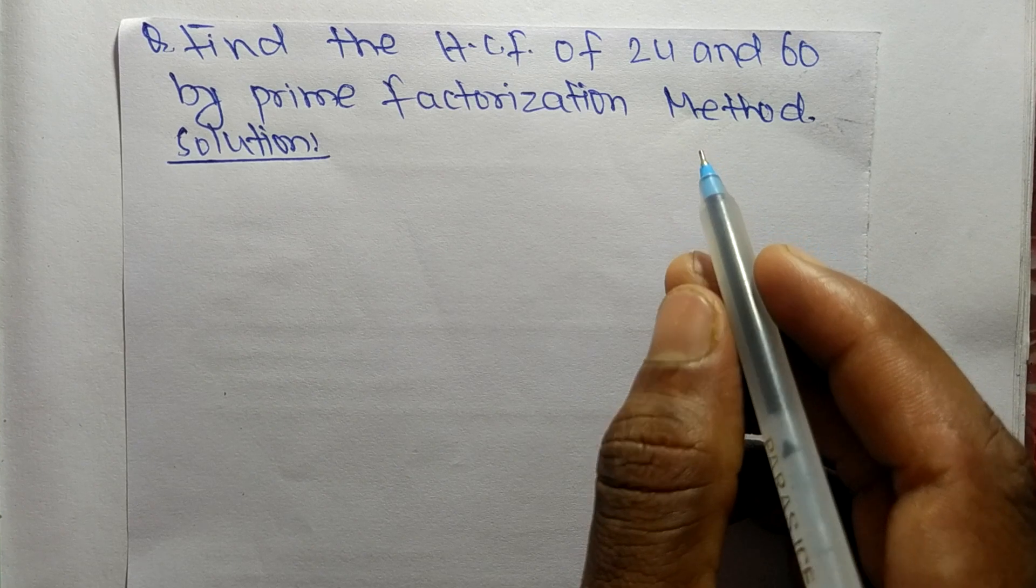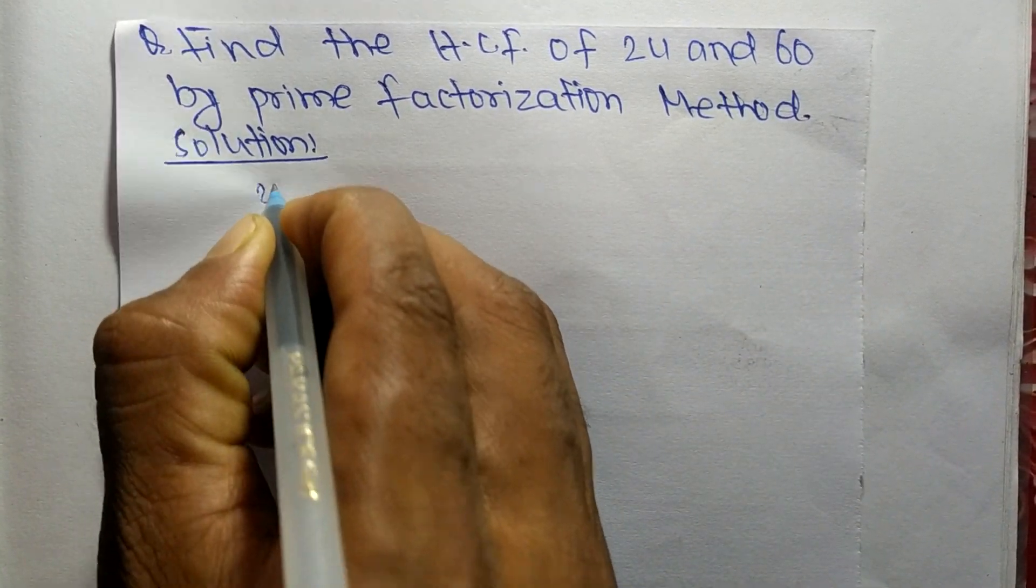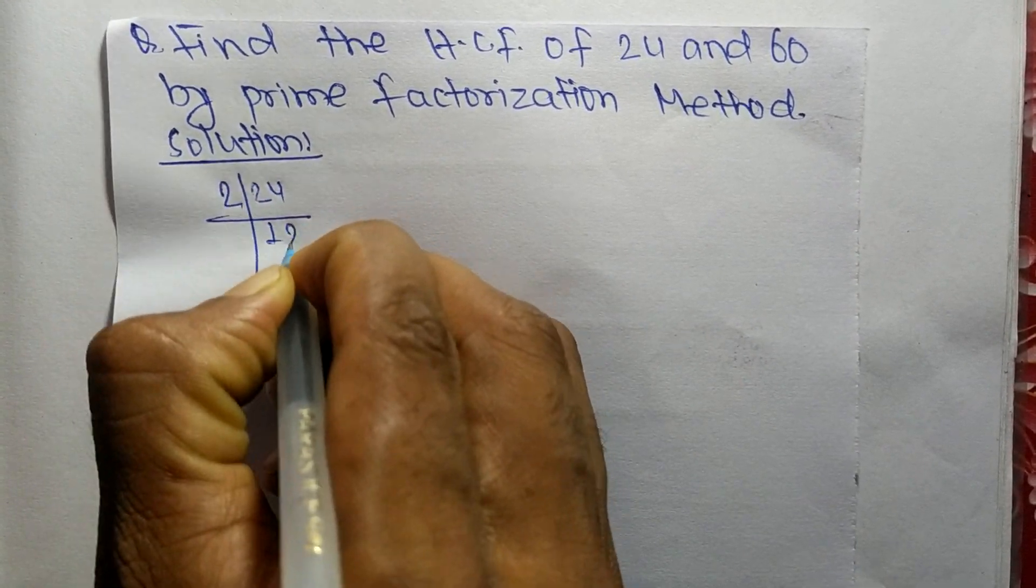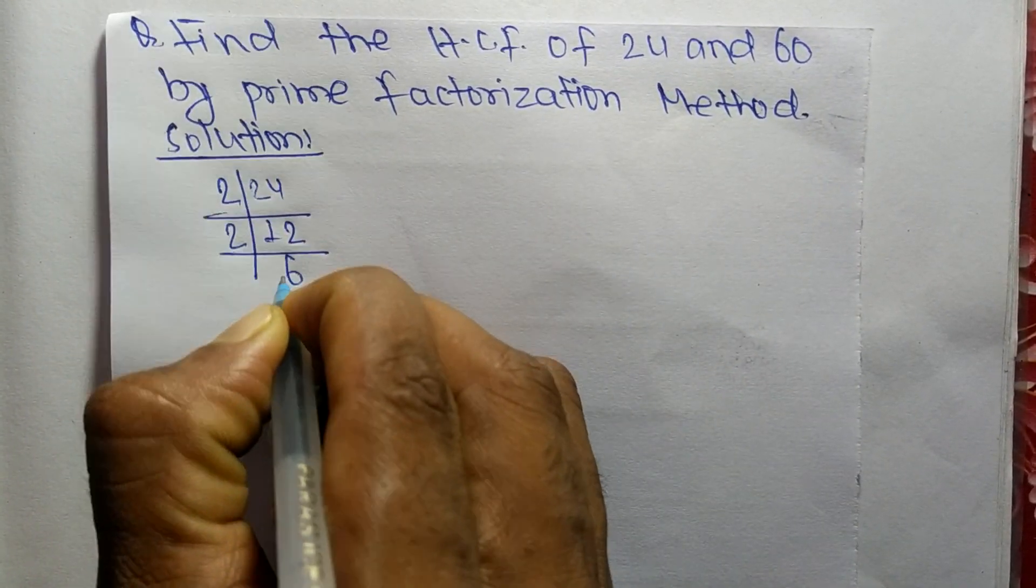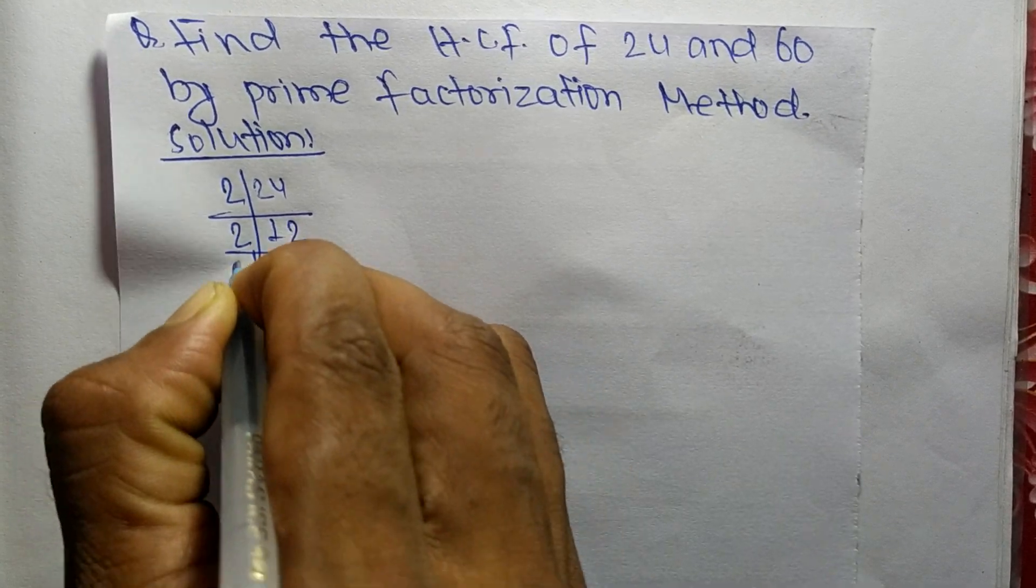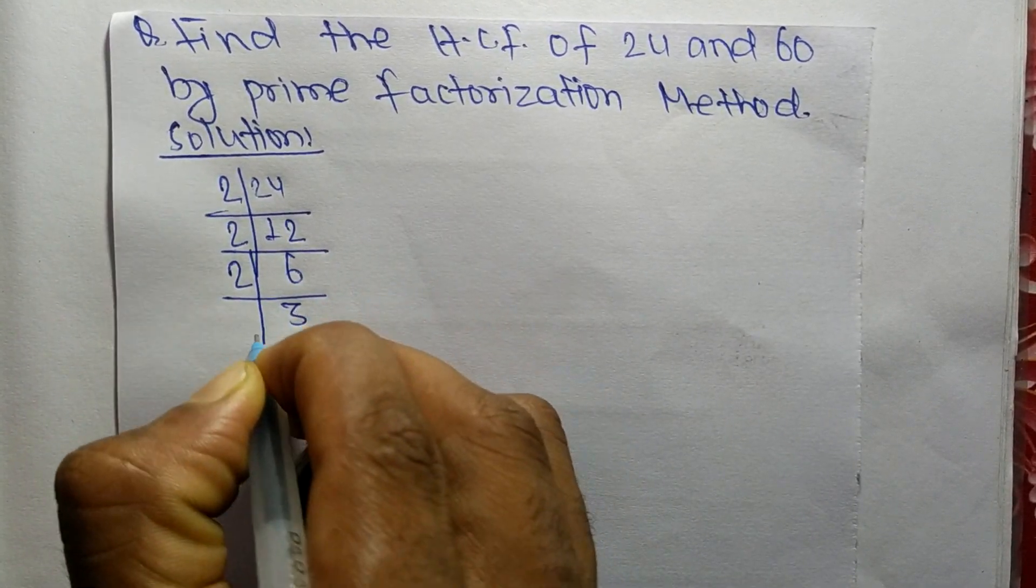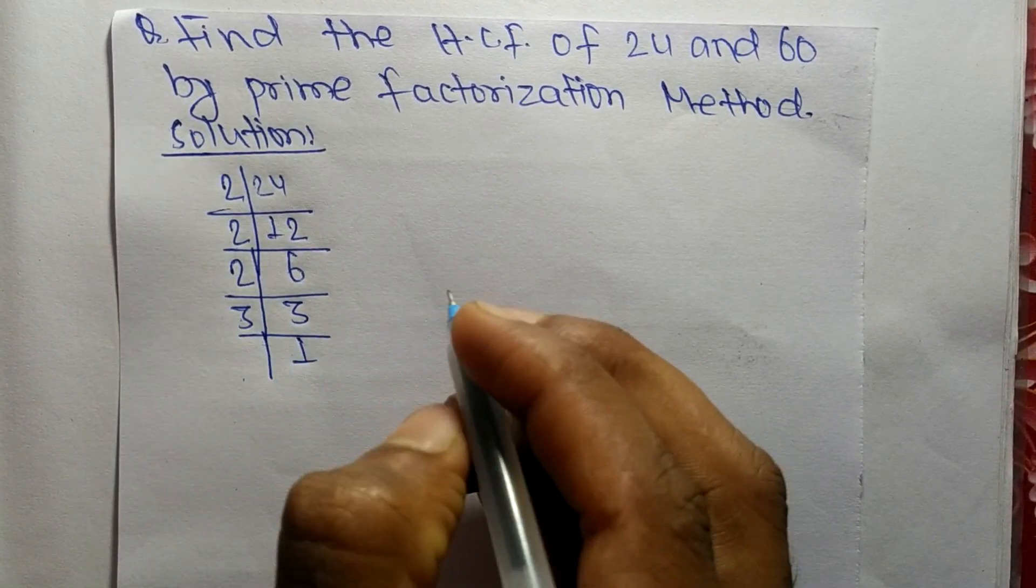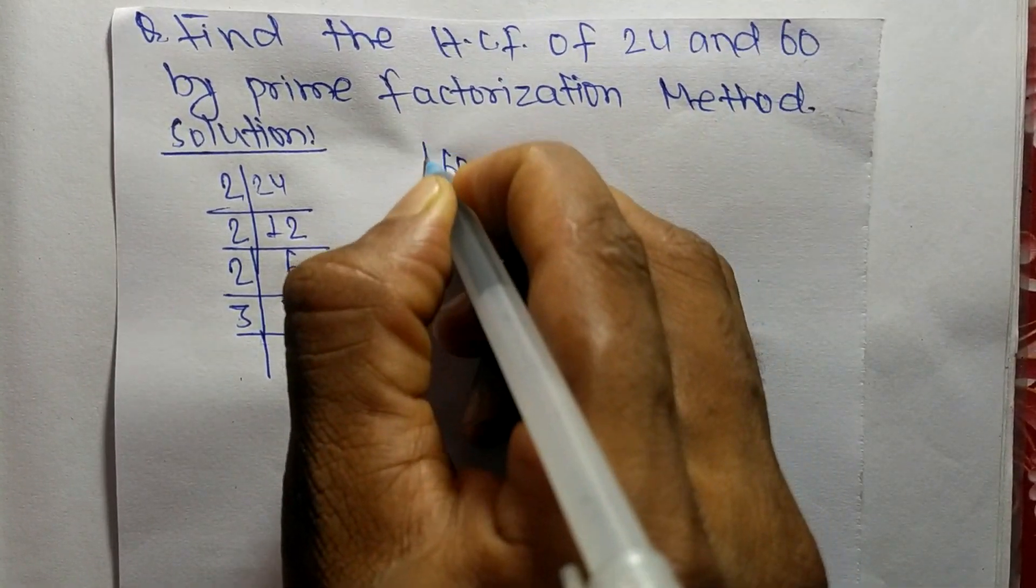First we find the prime factors of 24. It is 2 times 12 equals 24, 2 times 6 equals 12, 2 times 3 equals 6, and 3 times 1 equals 3.